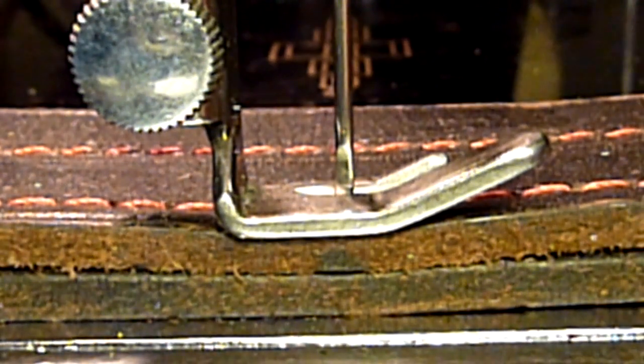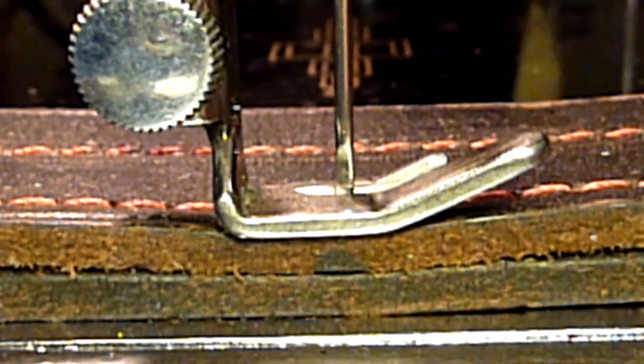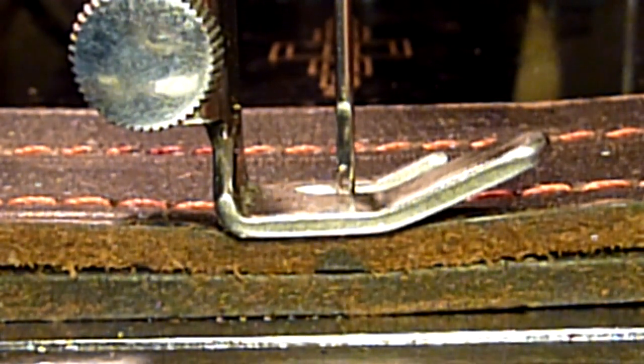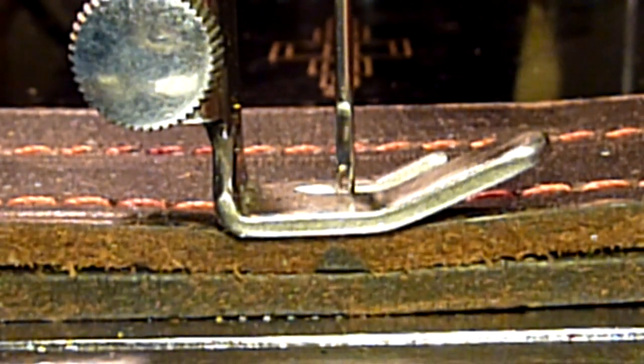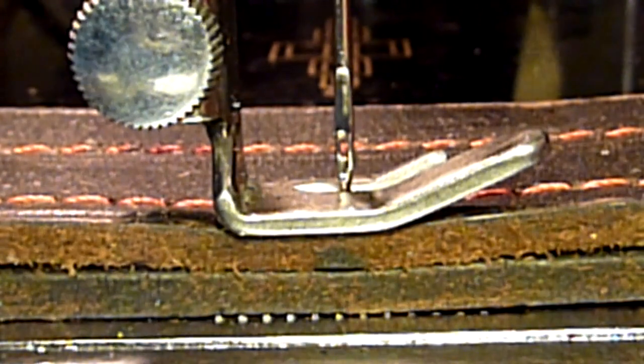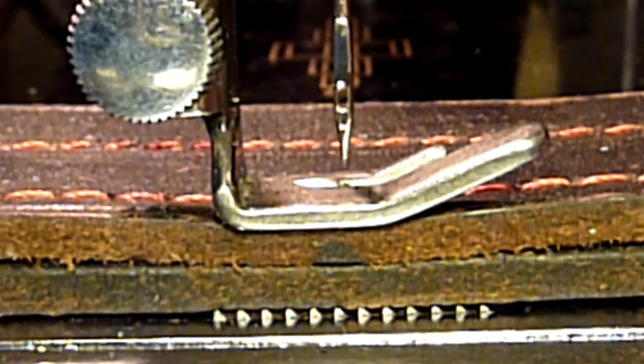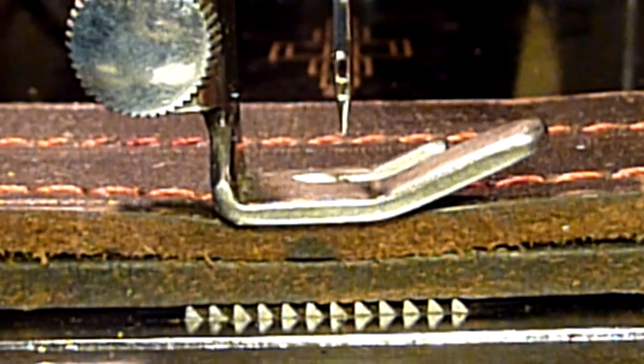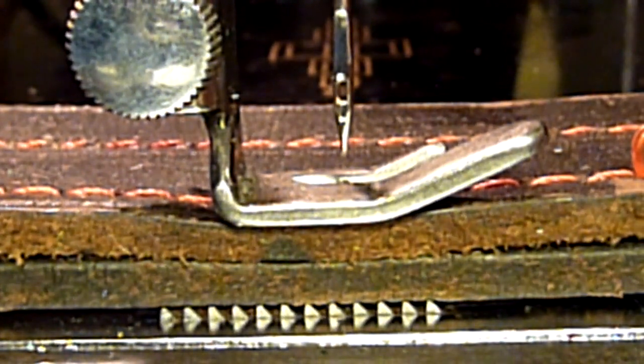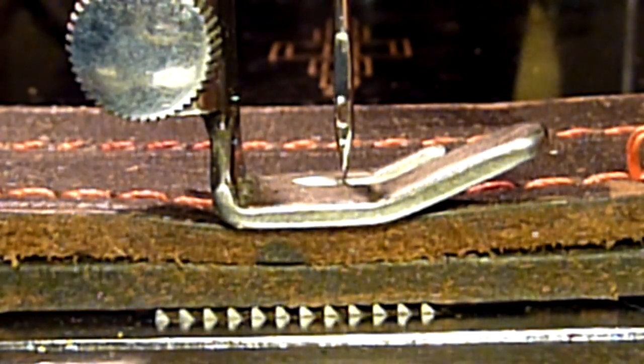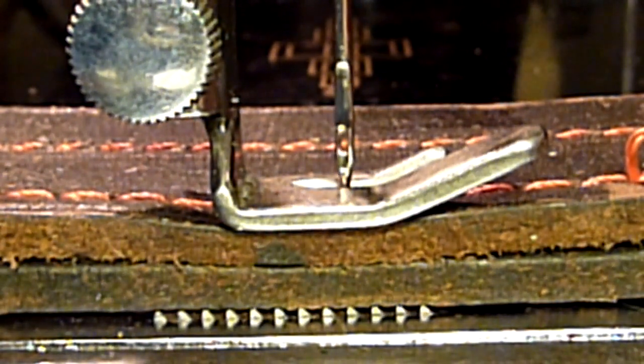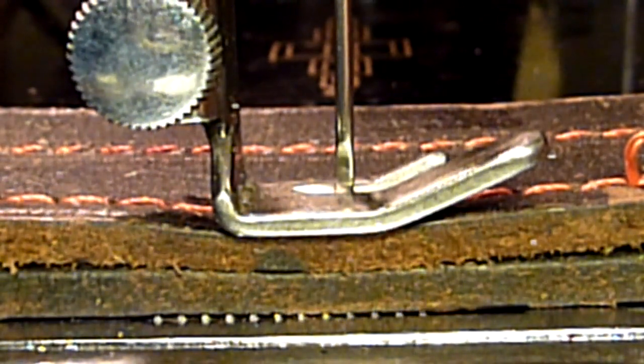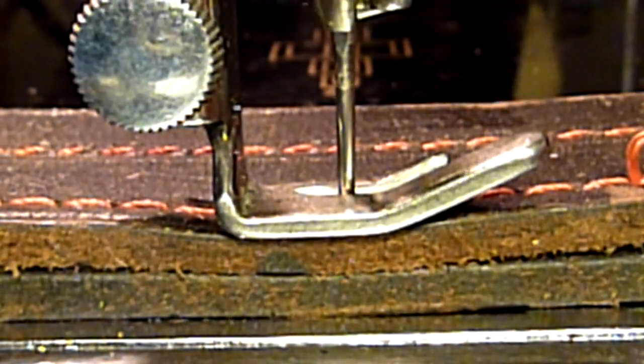This shows the feed dog timing when it has been advanced about 30 degrees. And we start here with the needle is leaving the fabric here, and it is not moved by the feed dogs. Now the feed dogs raise. And now it starts to move. And then the needle starts to descend again. And they don't move anymore. And now the needle hits the fabric. And it is not moved anymore. And there is no problem.